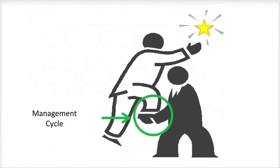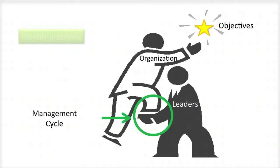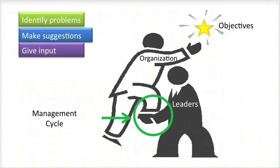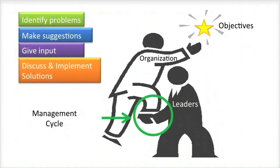The Management Cycle is the process by which the leaders of an organization help workers throughout the organization ensure that it achieves its objectives. When management effectively uses the Management Cycle, the organization's workers become enabled. They take a more proactive role in solving the organization's challenges by identifying problems, making suggestions, giving input, discussing and implementing solutions.